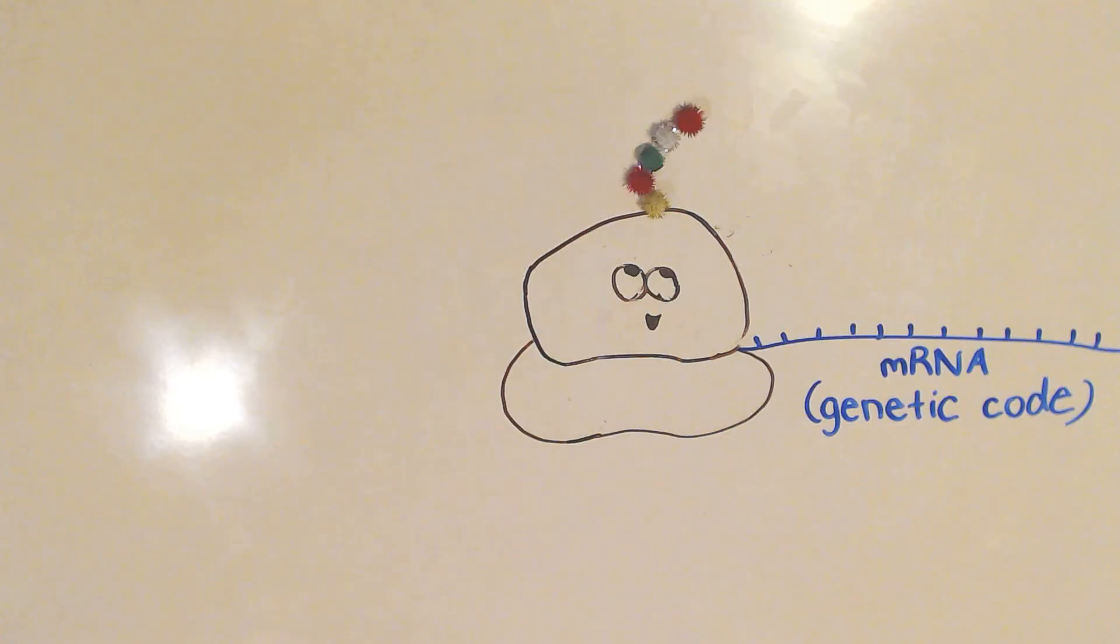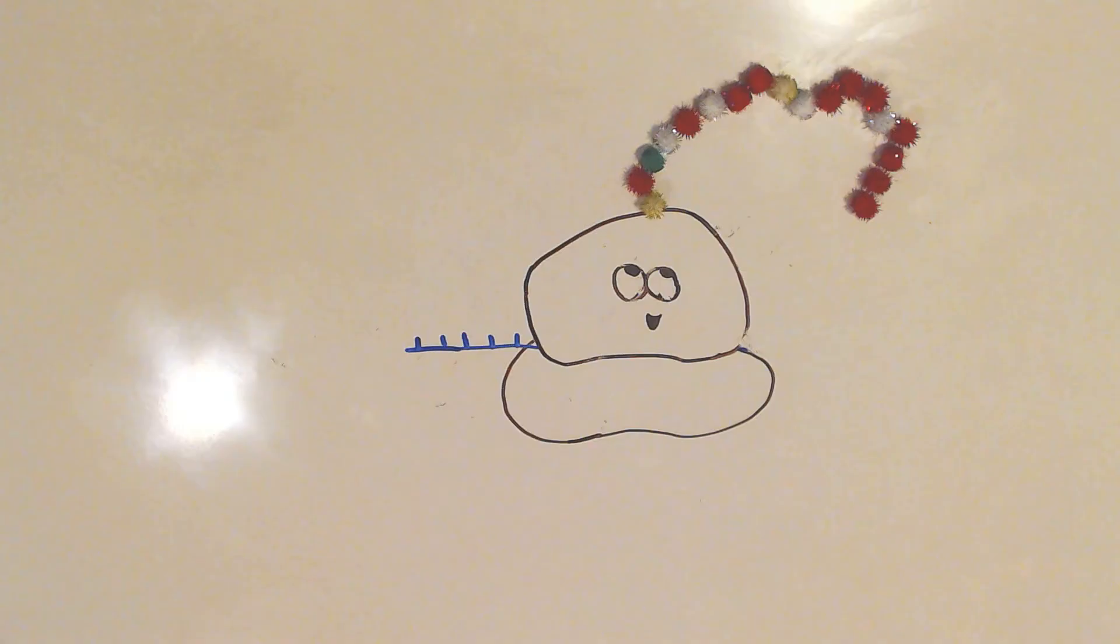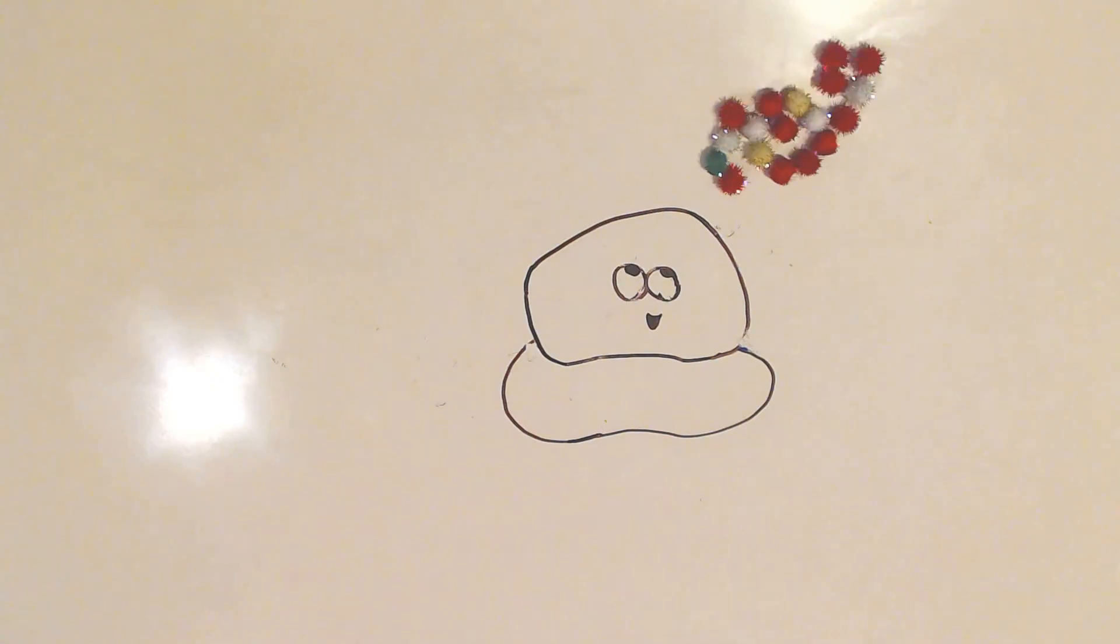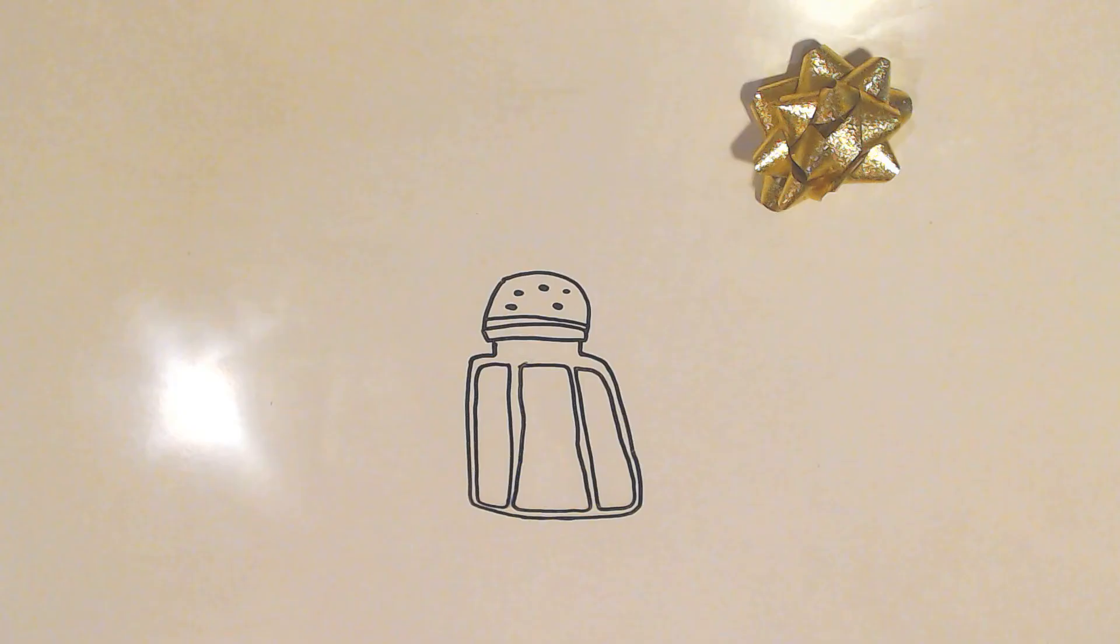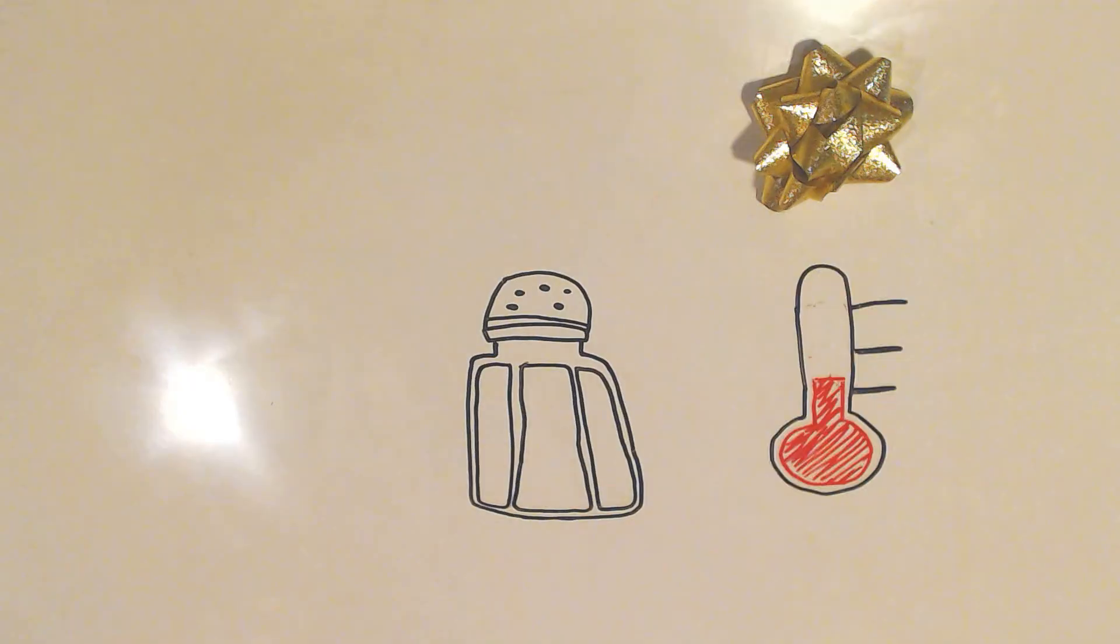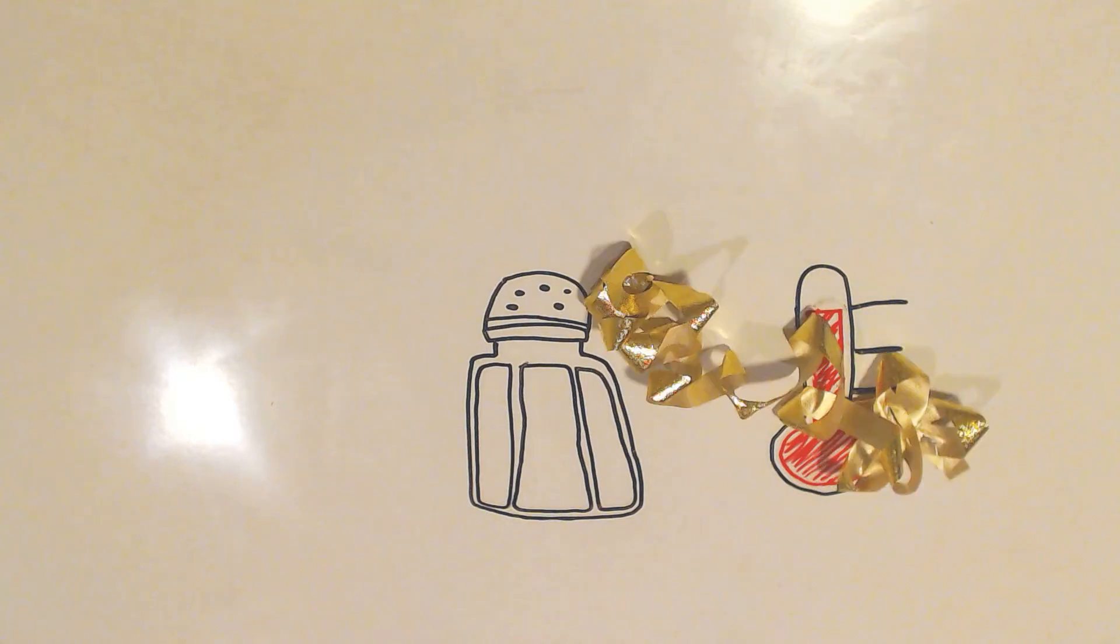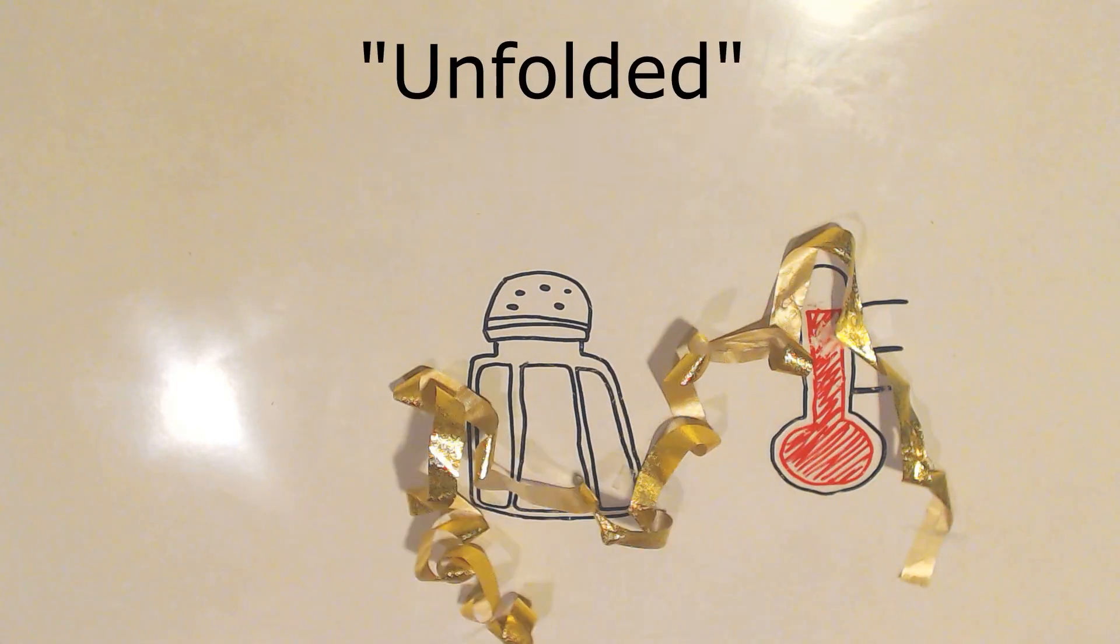Proteins are made up of amino acids, which form a long chain and then fold and coil themselves into a 3D shape through bonds. Any aspect, such as salt concentration or temperature, can cause the protein to unravel, losing its shape and becoming unfolded.